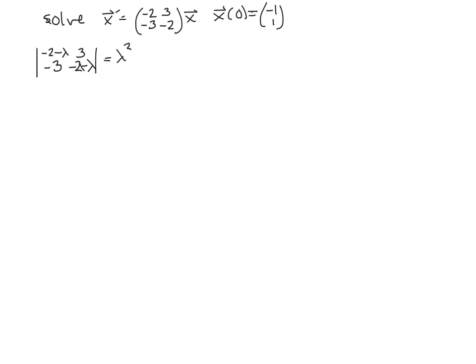I have -λ times -2, that's positive 2. Looks like that happens twice, so that's plus 4λ. Then I've got -2 times -2, so that's 4. And then on the other diagonal I have -9, but I need to subtract that. Let me think about this one again. I've got 4 minus -9, so I do believe that's going to be 13.